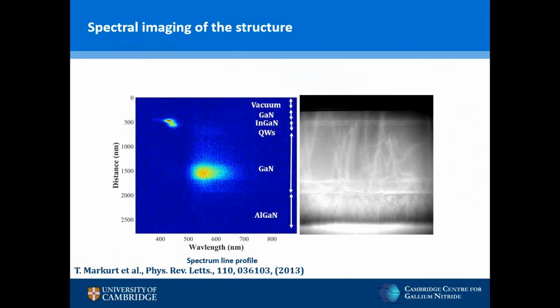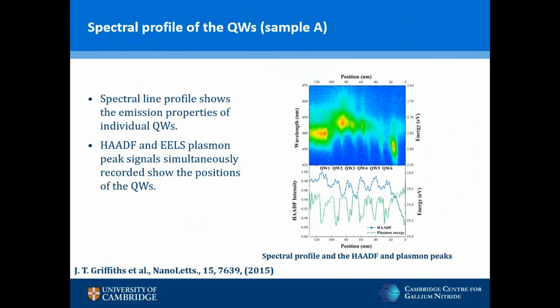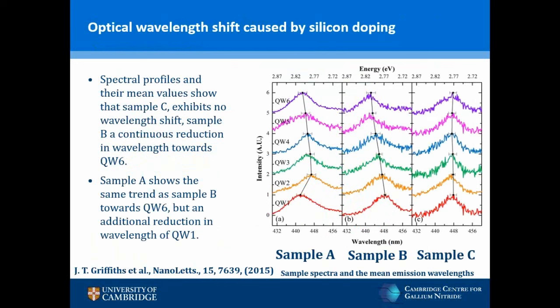The line profile also shows, even with low pixel density, variations in the emission wavelength across the quantum wells. To investigate this further, we performed on sample A a spectral profile across the quantum wells with a pixel size of just one nanometer. It shows six distinct optical emission features that directly correlate with the position of the six quantum wells identified by the simultaneously recorded STEM signal and the variation in the EELS plasmon peak. We observe a blue shift in the first quantum well and a continuing blue shift towards quantum well six. We studied quantitatively the variation in emission peak wavelength by recording more than 20 line profiles for each sample.